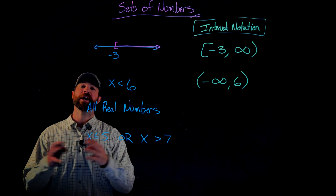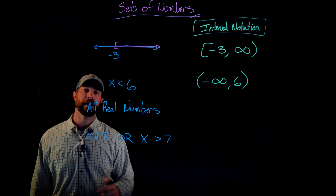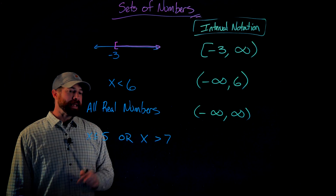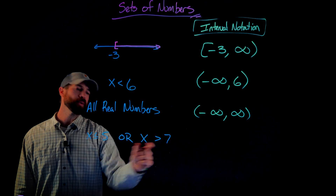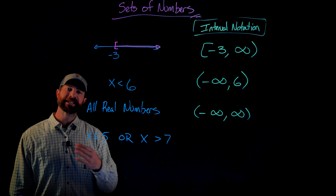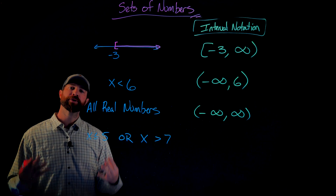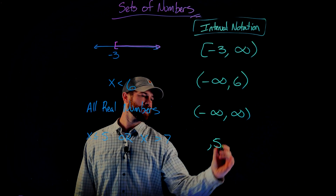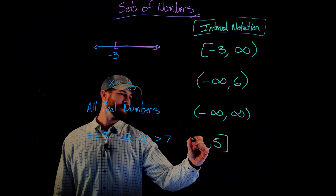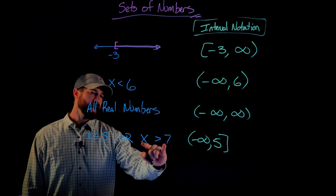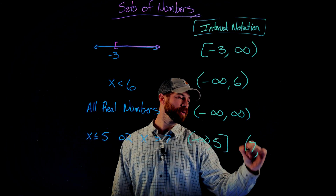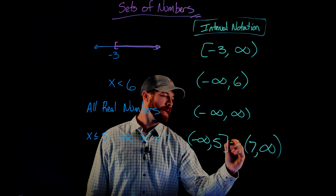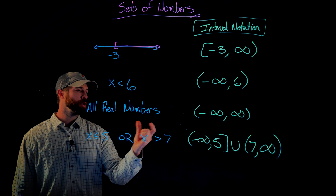If we want to represent all real numbers, this is an unbounded set with no upper bound or lower bound. We write that as negative infinity to infinity: (-∞, ∞). In the last case, we're given a disjoint set — two separate intervals. We represent both of those separately and then combine them with the union symbol. X less than or equal to 5 gives us negative infinity to 5 with a bracket on 5, and x greater than 7 gives us 7 to infinity with a parenthesis on 7. We join those into one set using the union symbol.